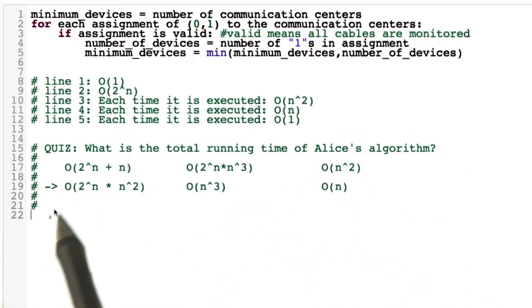So that's why the running time of Alice's algorithm is O of 2 to the power of n times n squared.